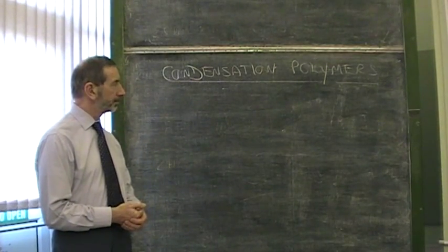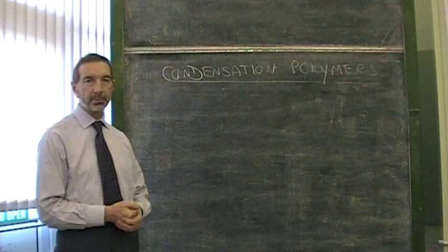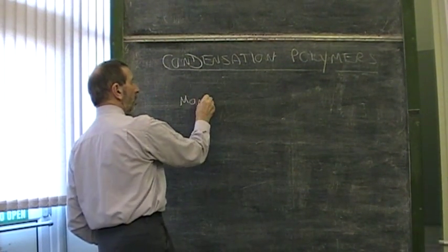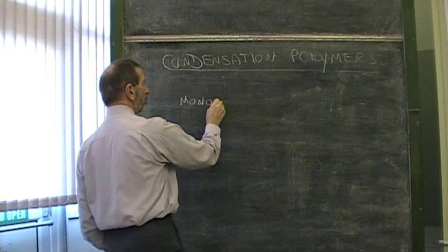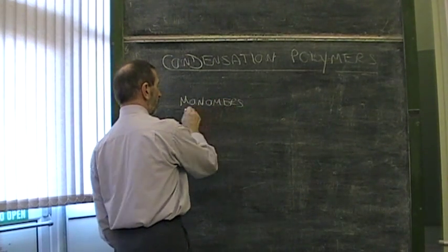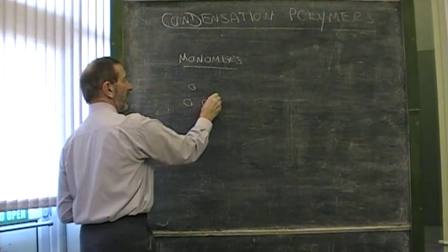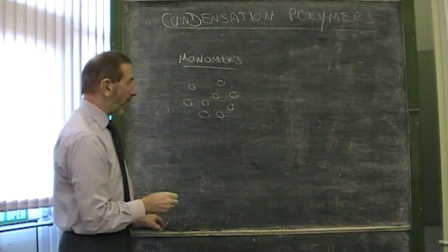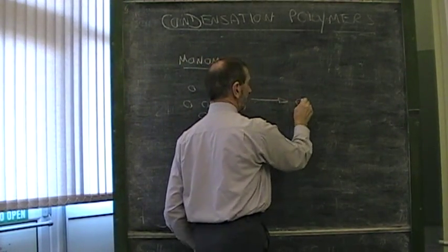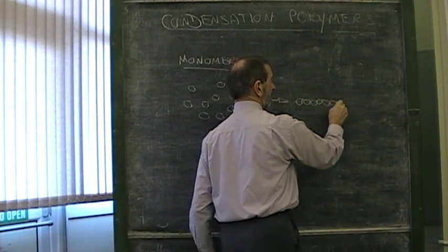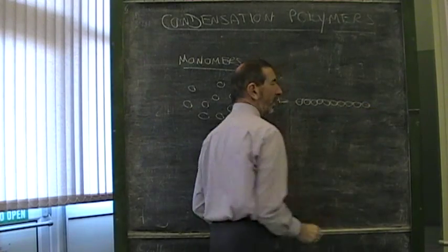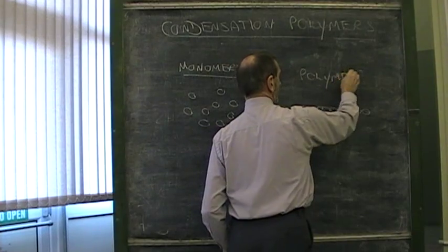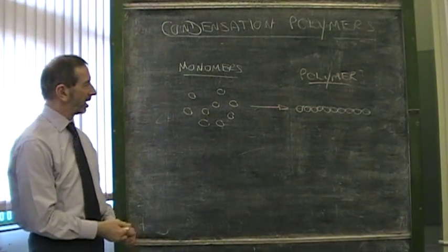Condensation polymer. What are condensation polymers? Well, we know what a polymer is. A polymer is made when lots of small molecules called monomers join together. So here are some imaginary monomer, little molecules. When they polymerize, when they join together in large numbers, not just two or three, but hundreds and thousands, we end up with something called a polymer. The question is, how do they join together?